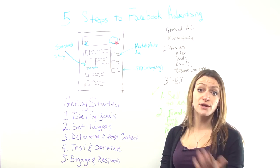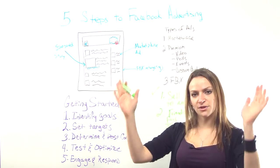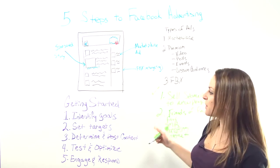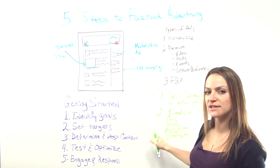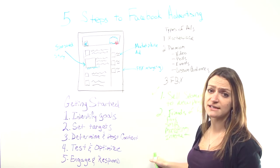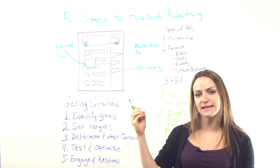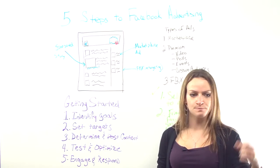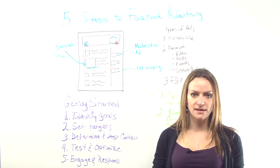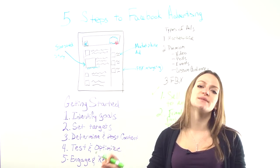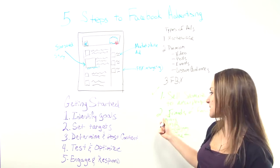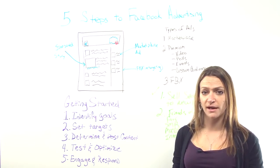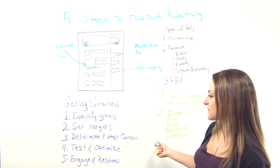Think of it the same way as a paid search campaign or a display campaign — you have your account, campaigns, and ad groups. Because if you're doing a marketplace ad, you want to have a different type of ad for each of these different target audiences. If you're advertising to friends of fans and to people identified as interested in marketing, you need different ad copy. So start by having different ad copy for each target.